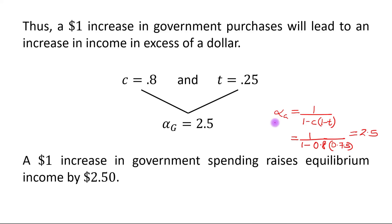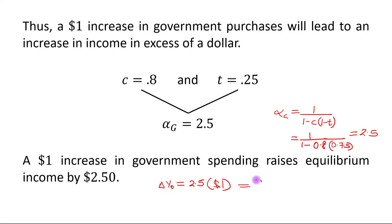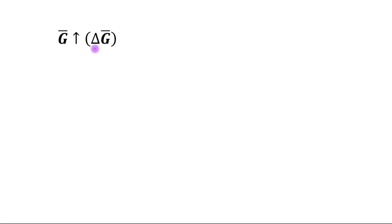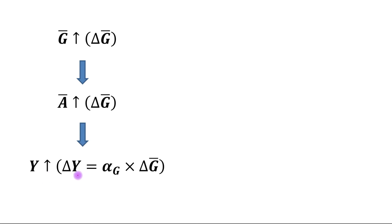When you solve this you get 2.5 as the value of the multiplier. A one-dollar increase in government spending raises equilibrium income by $2.50 — that is, change in equilibrium output = α_G × ΔG̅ = 2.5 × $1 = $2.50. So if G̅ increases by ΔG̅, autonomous spending increases by ΔG̅ and equilibrium output increases by the multiplier times ΔG̅.